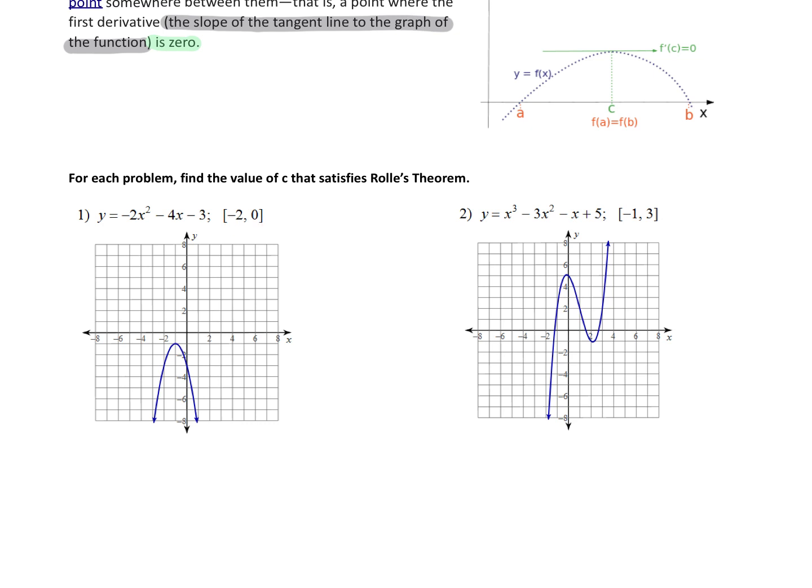So when x is negative two, right, these are x values of your interval. When x is negative two, it looks like y is down here at negative three. And when x is zero, it looks like it's also down there at negative three. So here is your interval from A to B, and they want to know the c value that will make a horizontal tangent line. You can kind of answer this graphically, right? The horizontal tangent line is right here at x equals negative one.